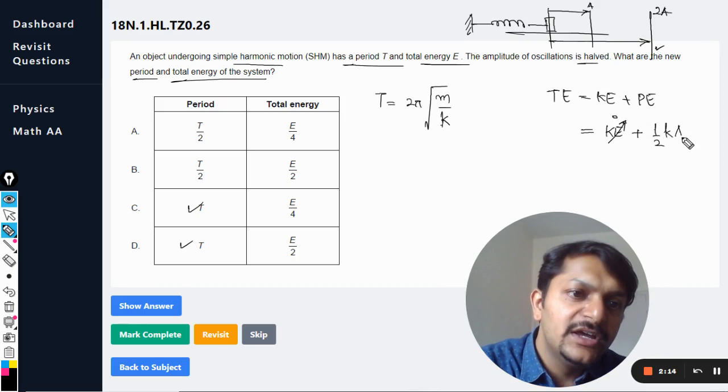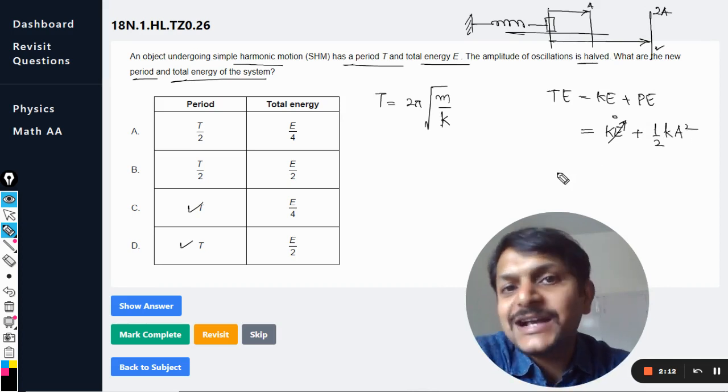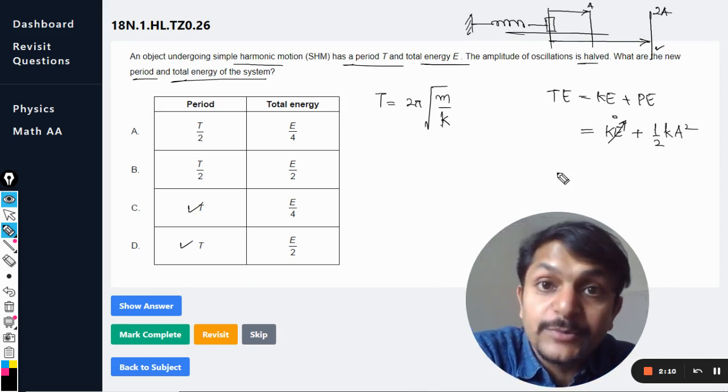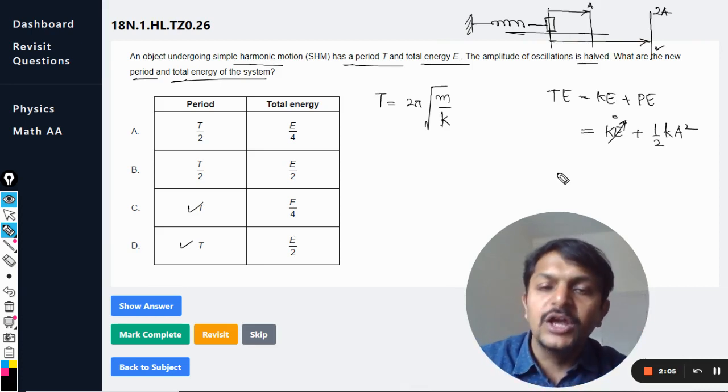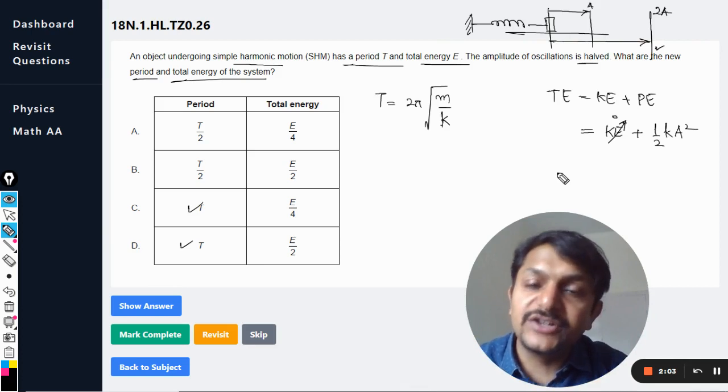That is given by (1/2)kx². This is the general formula for the elastic potential energy. But at the extreme positions, x is equal to a, that is amplitude, so the maximum potential energy is (1/2)ka², and that will be equal to the total energy.